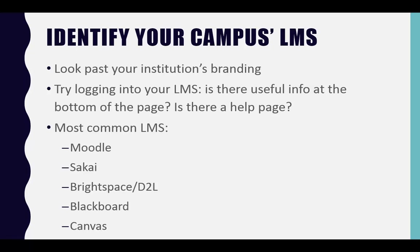If you want to get started on your own campus, begin by identifying your campus Learning Management System. Many places brand their LMS — for instance, at Cal State Fullerton it's branded as Titanium. If you're not sure, log in and it should say somewhere what your LMS is. The most common ones are Moodle, Sakai, Brightspace D2L, Blackboard, and Canvas.